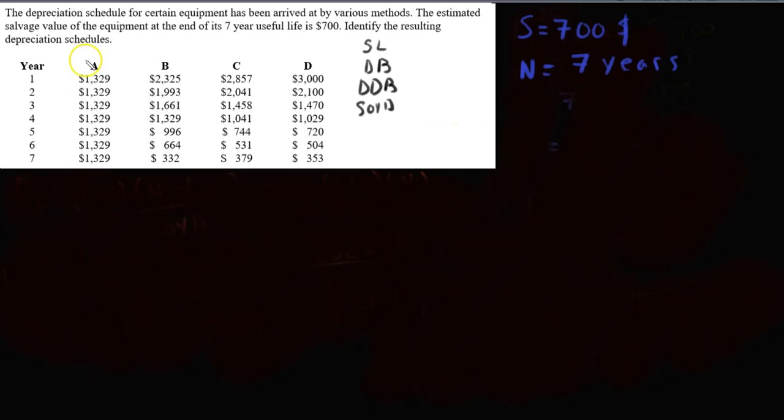Now looking at these columns here, you can pretty much see column A, the values are all the same. The depreciation at each year is the same. The asset decreases by $1329 every year. And we know from the previous video that corresponds to the straight line method. Right away, this is the straight line method.